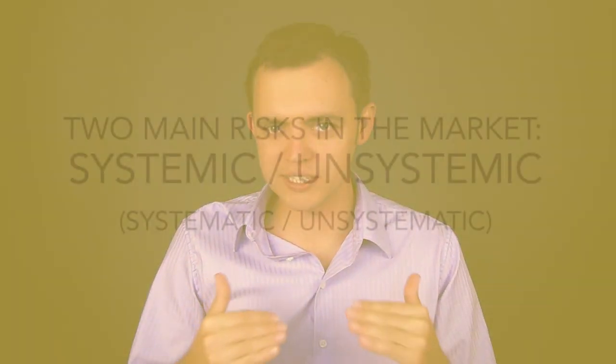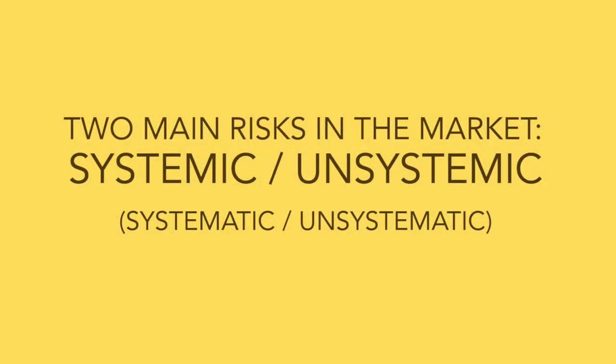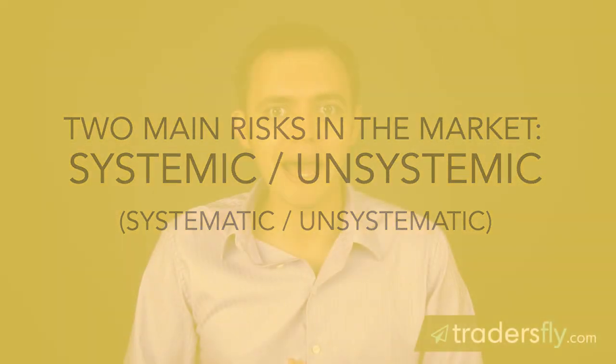This week, what I'd like to cover is the two main risks in the market, and they are systemic risk and unsystemic risk. Sometimes some people call them systematic risk or unsystematic risk, but I use the term systemic and unsystemic risk.